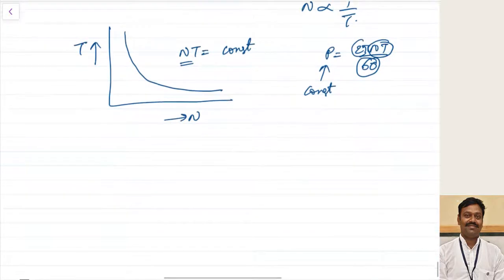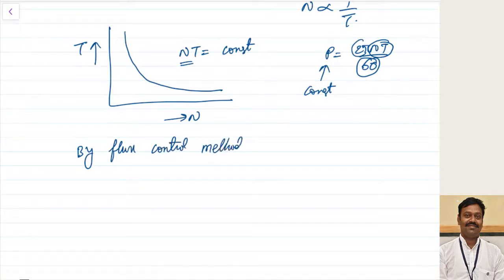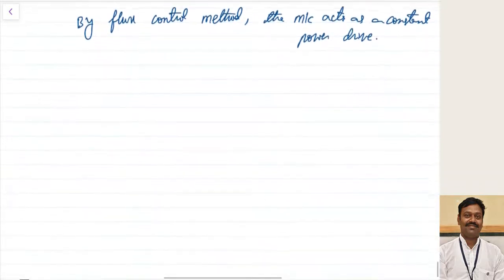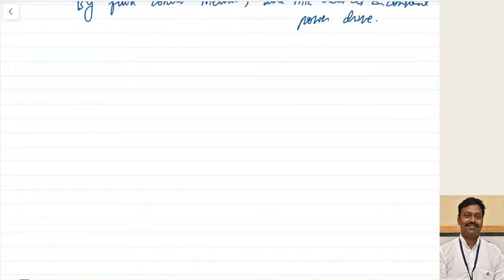Since N×T is constant and power P equals 2πNT divided by 60, the power will be constant. Therefore, by the flux control method, the machine acts as a constant power drive. We have discussed constant power drive in the previous lecture, lecture number 16.